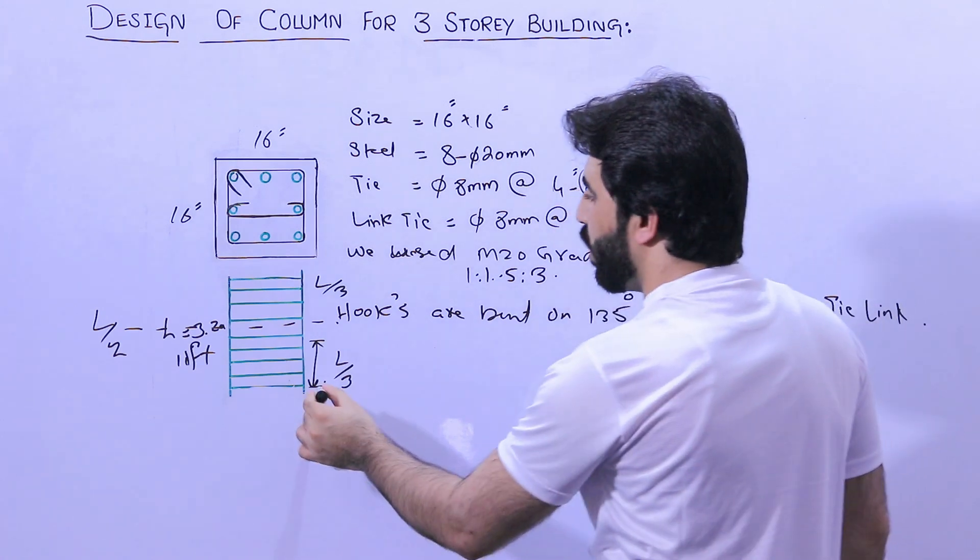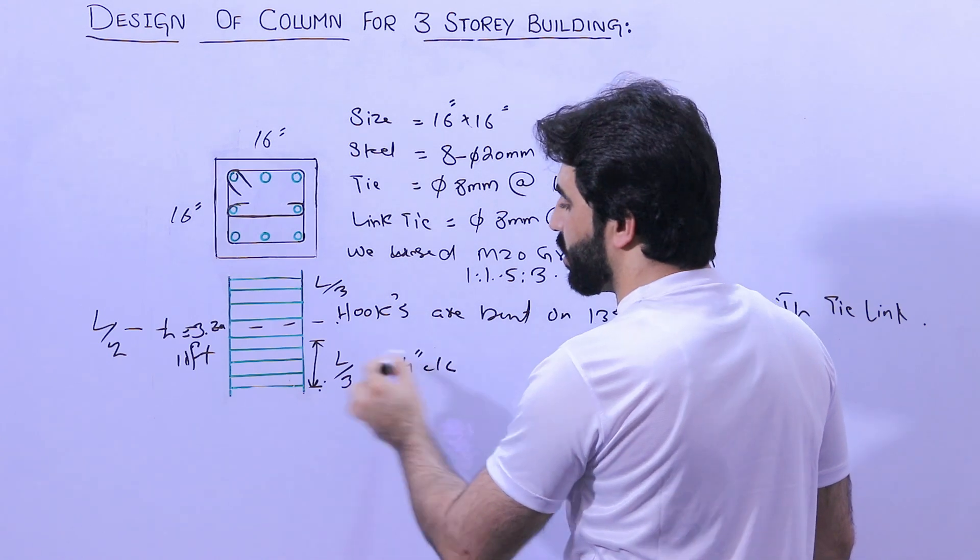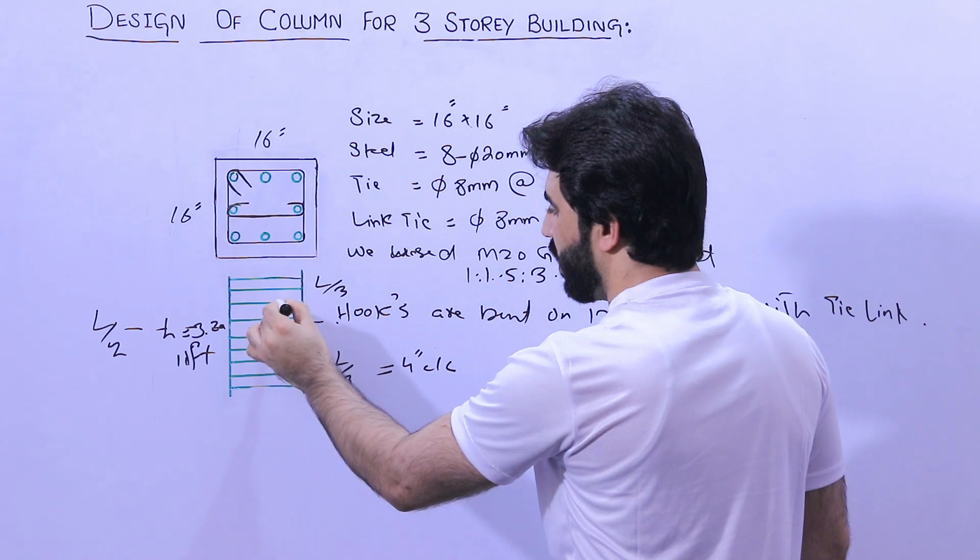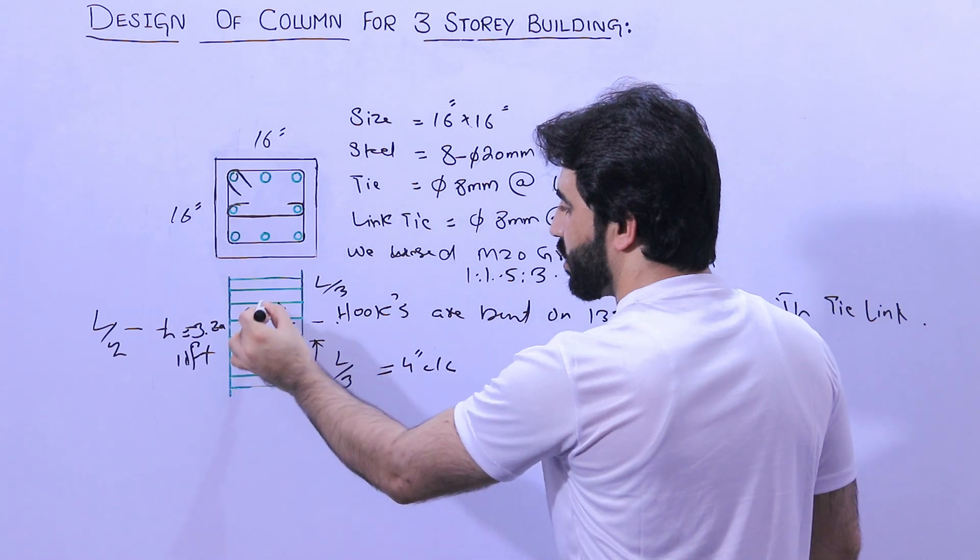After L by 3, we increase the spacing of ring which is 6 inches. And at the bottom and also at the top it was 4 inches center to center. After L by 3 we used 6 inches and here we used 4 inches center to center.